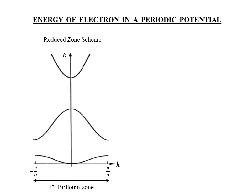The energy dispersion in the reduced zone scheme is found to be useful when dealing with electron transitions between the bands. Even in our present discussion of Bloch oscillations, a little later, I shall be deriving a relation for the velocity of electrons in a band. At that time, I shall approximate the energy dispersion of electrons in a band to a cosine function as pointed out in the diagram.